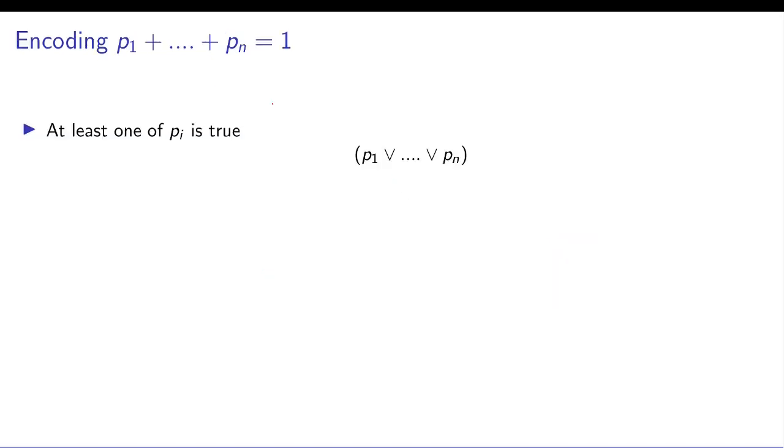Let's first see sum of p1 equals to 1. We can split the requirement into two parts. We can say that at least one of them must be true, and that can be easily encoded as a disjunction of p1 to pn which is naturally already in CNF form.